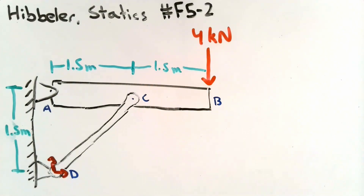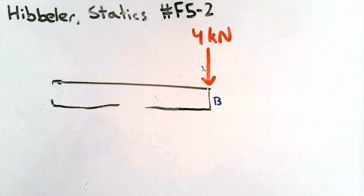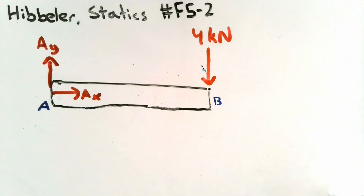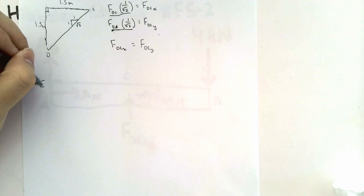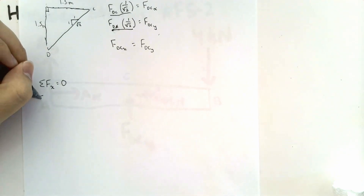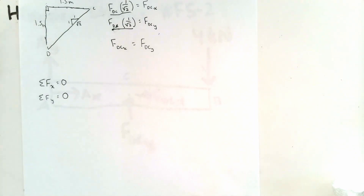Now let's draw our free body diagram. At A, we have a hinge, and hinges provide reaction forces in the x and y directions. At point C, we have a force from the two-force member — force DC. We'll split it up into its x and y components. Now that we have our free body diagram drawn, we can apply our equations of equilibrium to solve this problem.